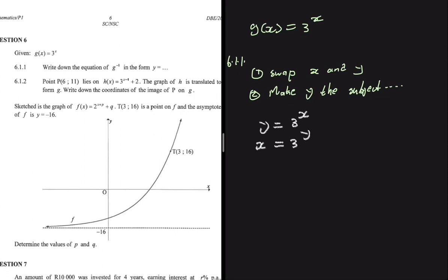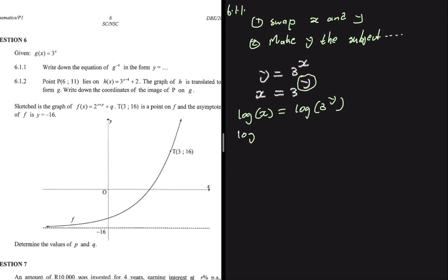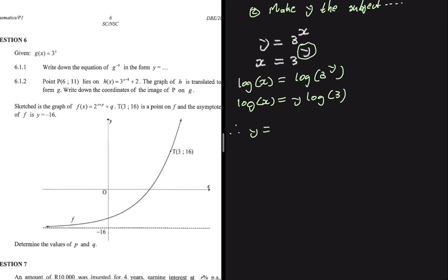For step two, we make y the subject of the formula. Since y is in the exponent, we introduce log on both sides: log of x equals log of 3 to the power y. We bring the exponent down to get log x equals y log 3. Dividing both sides by log 3 gives y equals log x divided by log 3.